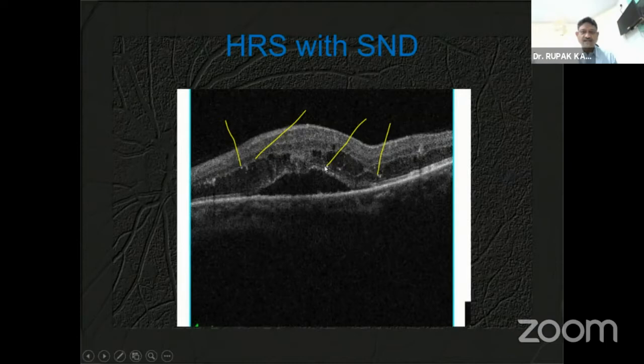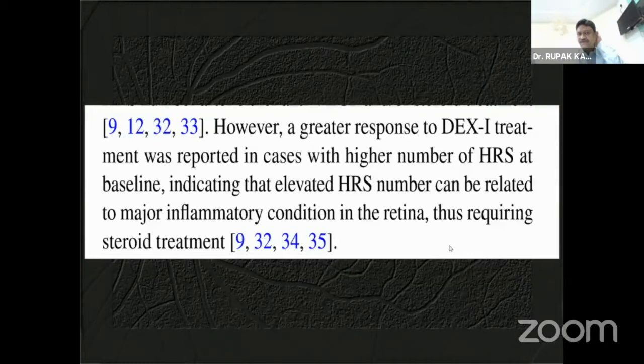Here is an example of those hyperreflective spots — I have just marked them here. In the presence of hyperreflective spots, this is an indication that these patients have a greater preponderance for having more cytokines. These patients respond well to the dexamethasone implant, as reported in different cases.